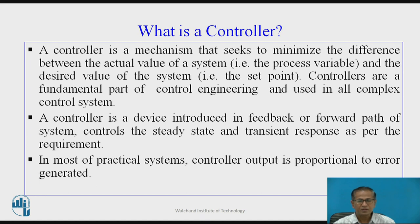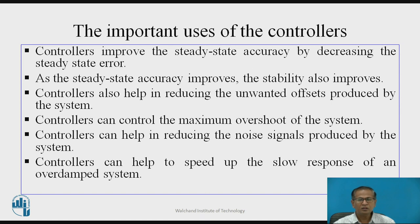In most practical systems, the controller output is proportional to the error generated. The important uses of controllers: controllers improve the steady state accuracy by decreasing the steady state error. As the steady state accuracy improves, the stability also improves. Controllers also help in reducing the unwanted offsets produced by the system. Controllers can control the maximum overshoot of the system, help in reducing the noise signals produced by the system, and help to speed up the slow response of an over-damped system.